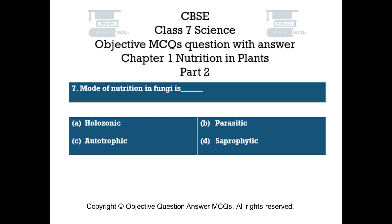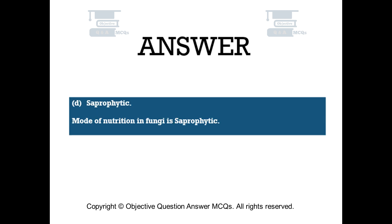Question number 7: Mode of nutrition in fungi is. Option A: holozoic. Option B: parasitic. Option C: autotrophic. Option D: saprophytic. The right answer is option D — saprophytic. Mode of nutrition in fungi is saprophytic.